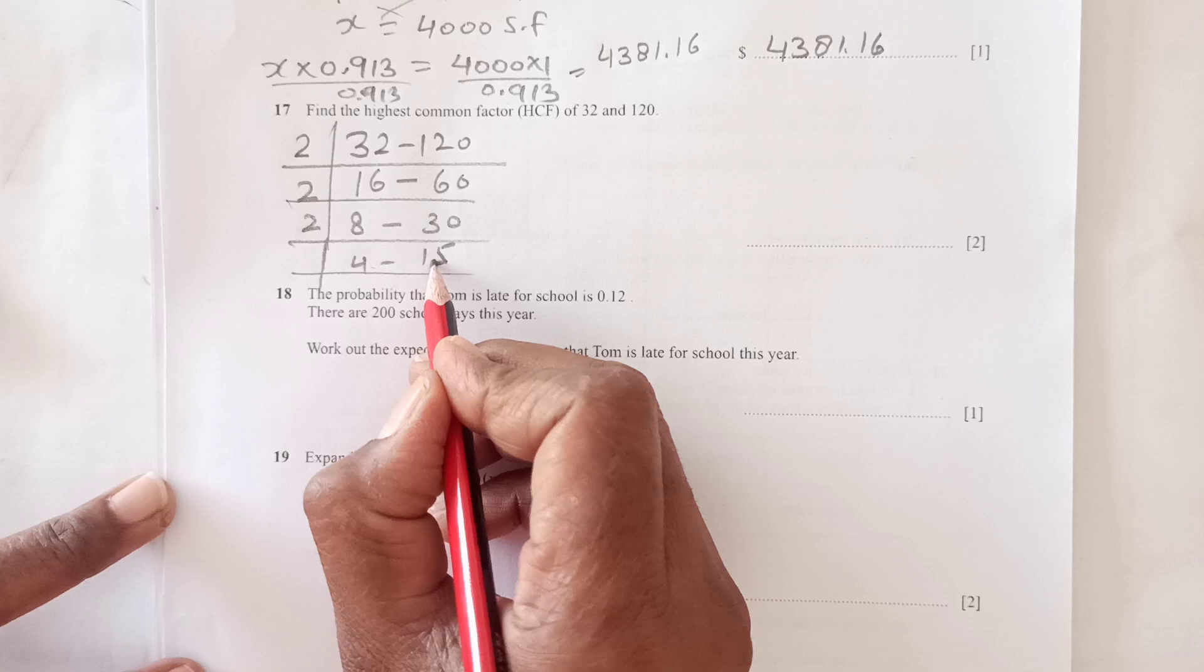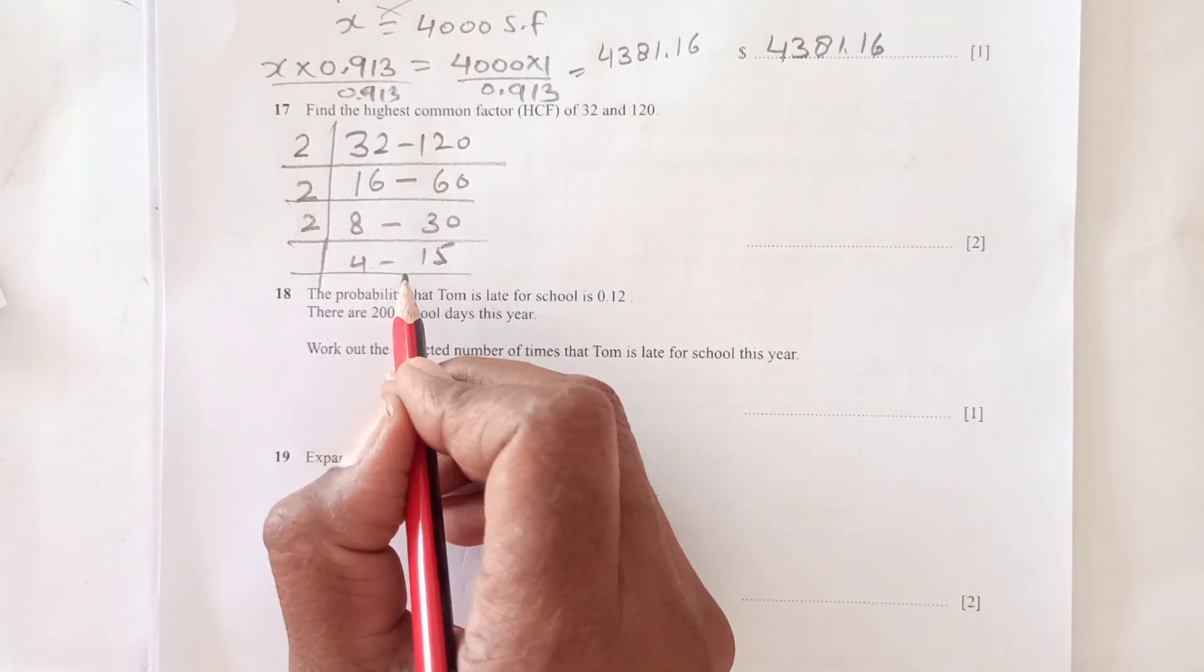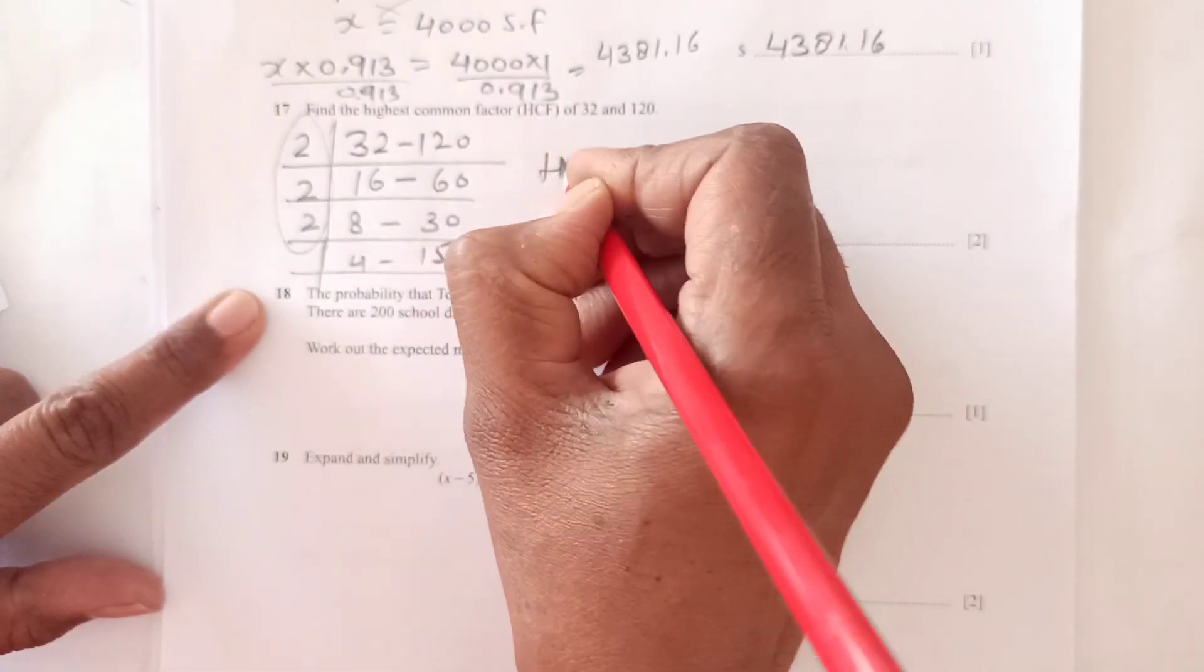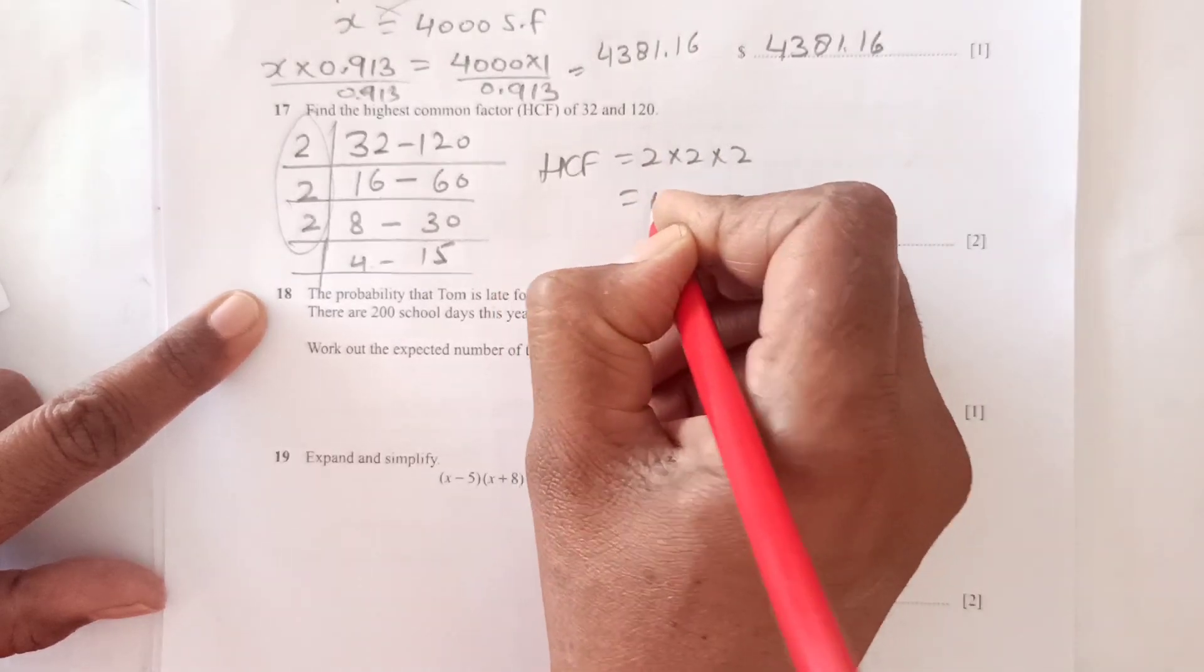Again divide by 2 to get 8 and 30, then 4 and 15. Since 4 is even and 15 is odd, there's no number that divides both. The HCF is 2 times 2 times 2, which equals 8.